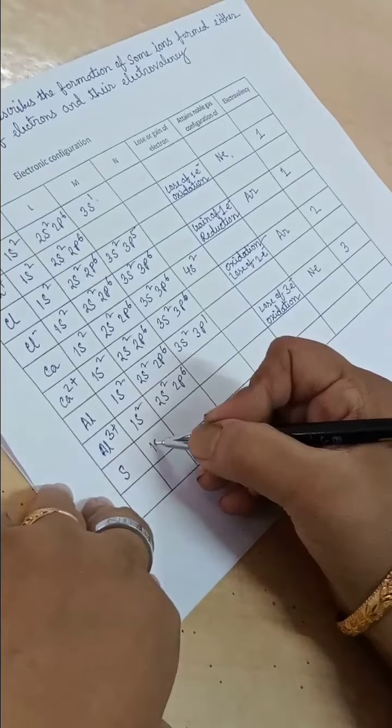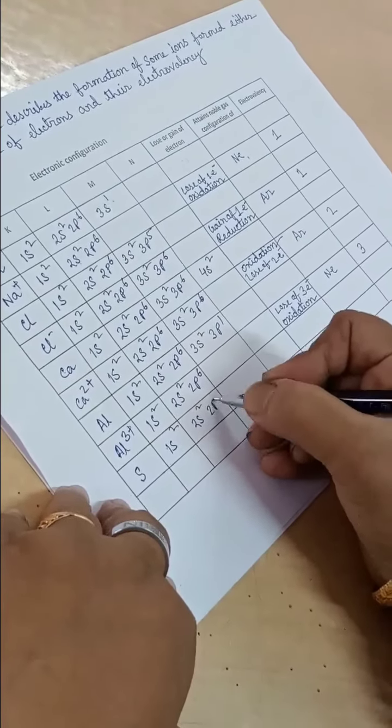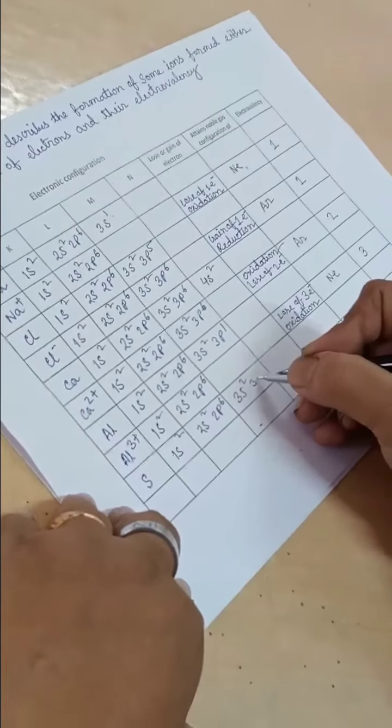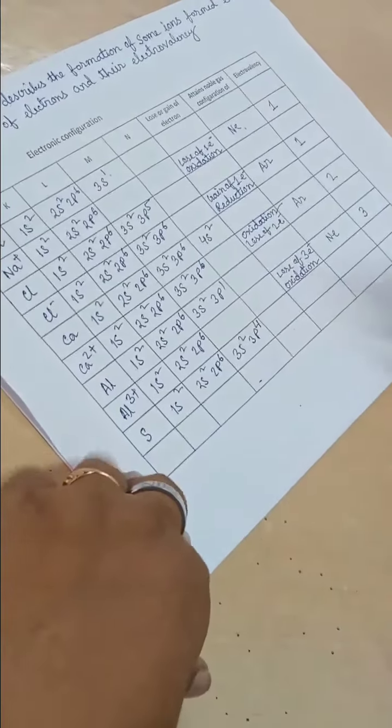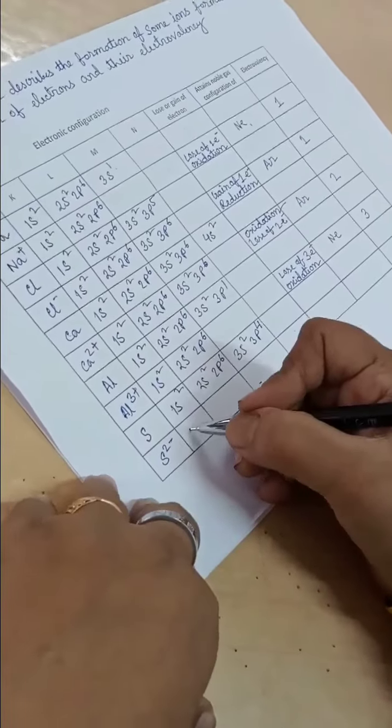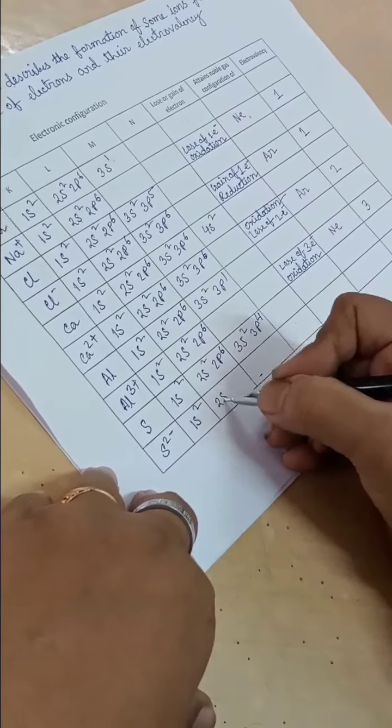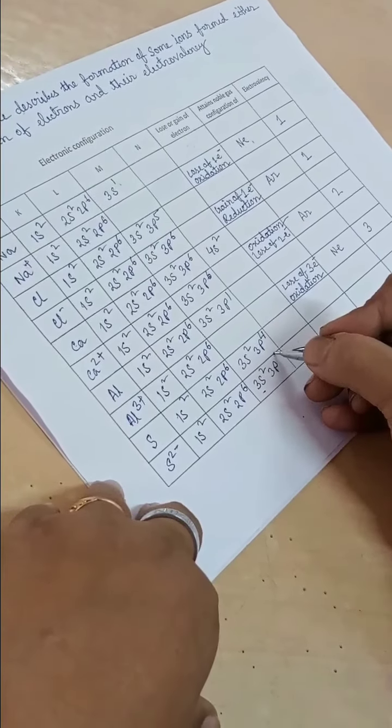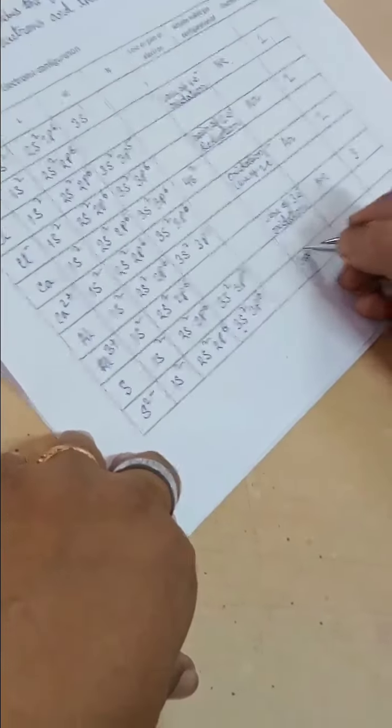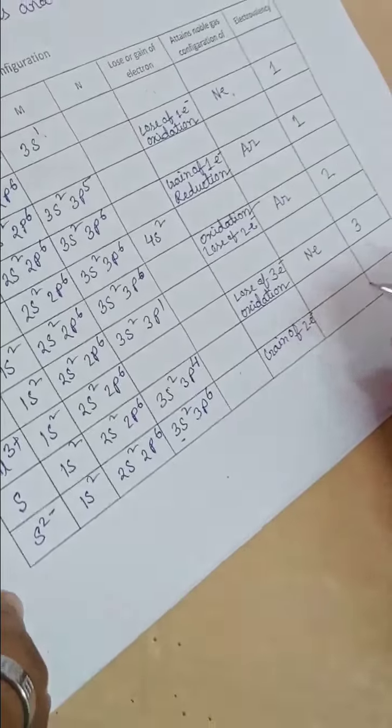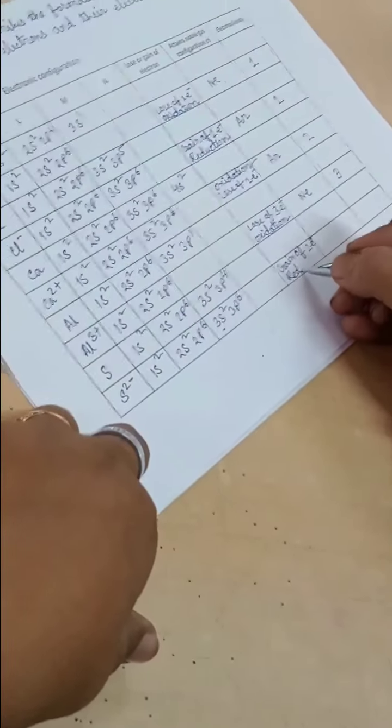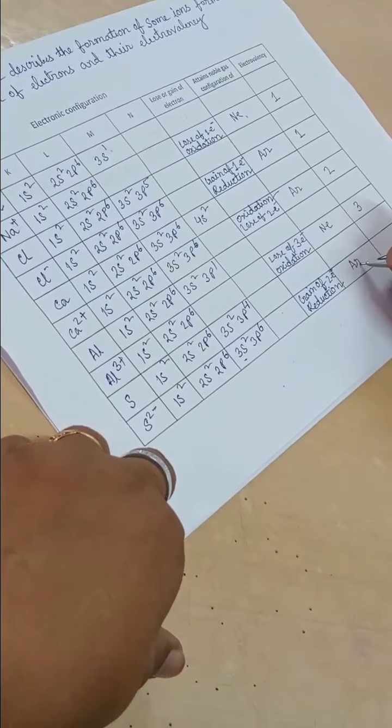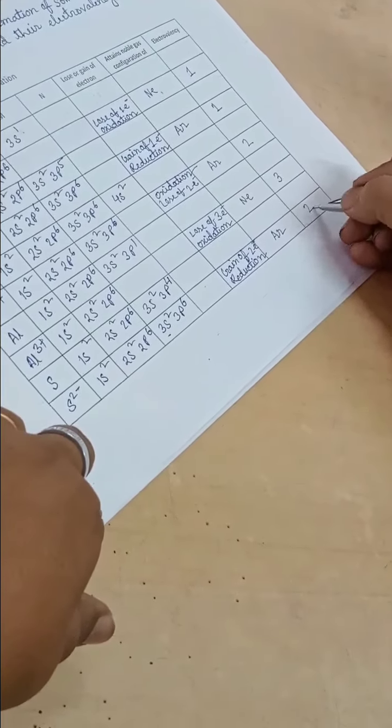Sulfur: 1s2, 2s2, 2p6, 3s2, 3p4. Sulfur 2-: 1s2, 2s2, 2p6, 3s2, 3p6. Gain of 2 electrons, reduction, attains noble gas configuration of argon, electrovalency 2.